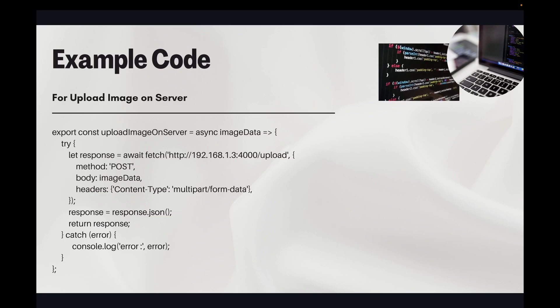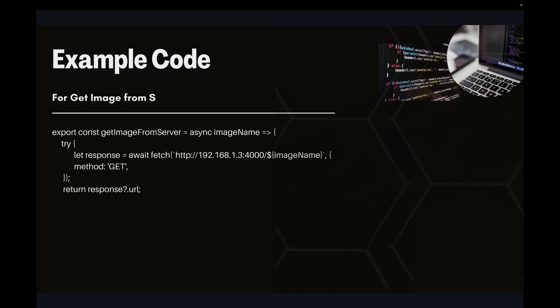This is the example code for uploading an image on server. For upload we will use the fetch request with POST method, add a body, and in headers we will use content-type multipart/form-data. Then I am converting the response to JSON and returning it. This is the example code for getting an image from server — we will use GET method with a path and then return the response.